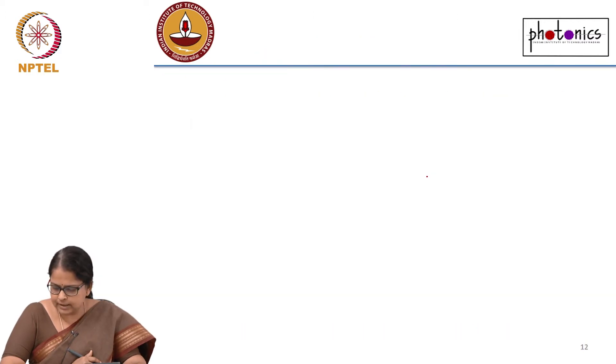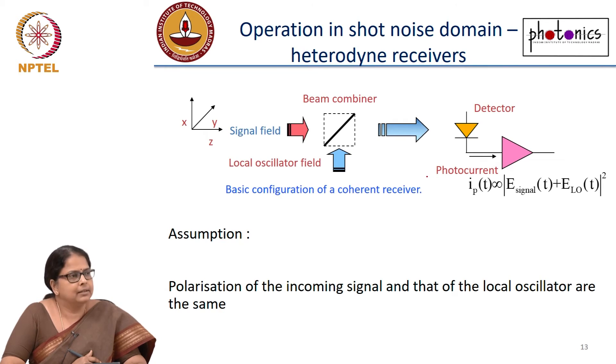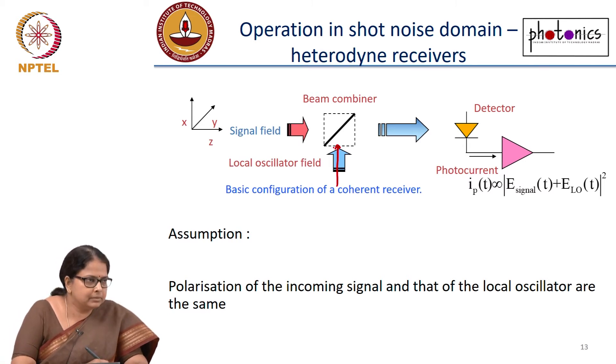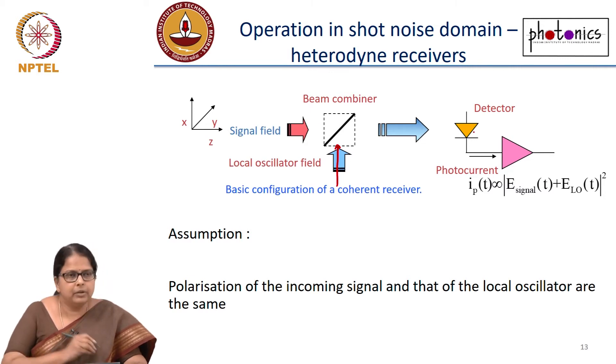What you can do is this - this is your signal. You can put in a local oscillator with large power, combine your signal with the local oscillator with a beam combiner, and allow it to fall on the detector.